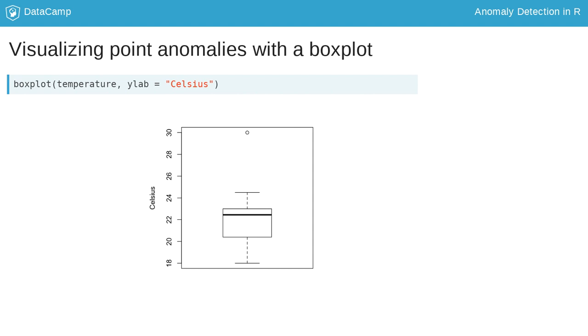The box extends to the upper and lower quartiles, while the whiskers stretch further and often extend to the maximum and minimum values in the data. The whiskers don't always reach the maximum and minimum values when extreme points are present, and instead the extreme values are represented as distinct points, making them easier to spot. In the case shown here, the maximum temperature of 30 Celsius stands out from the others and looks like a clear point anomaly.